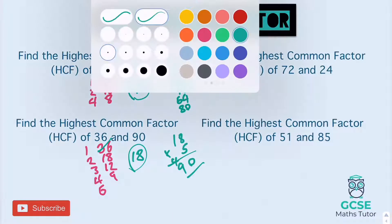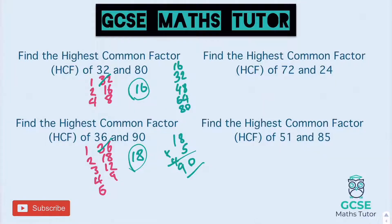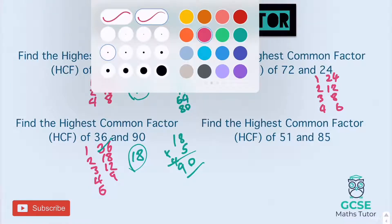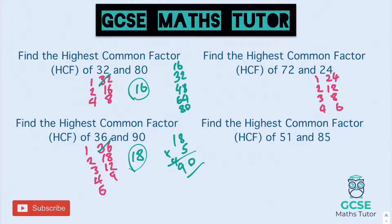Highest common factor of 72 and 24. Start with 24: one and 24, two and 12, three times eight, four times six, and five doesn't. Starting with the biggest: does 24 go into 72? Let's see: 24, 48, add four is 52, add 20 is 72. Yes! So 24 goes in. Highest common factor is 24.